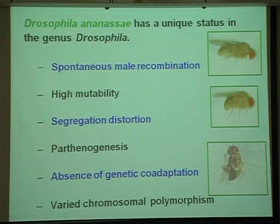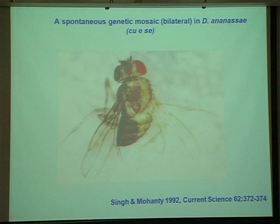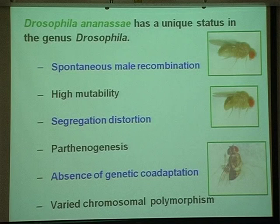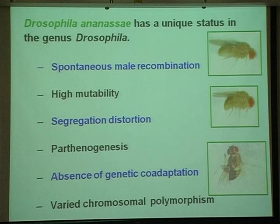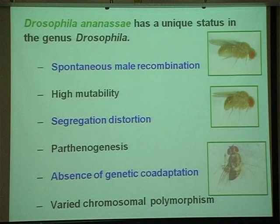Drosophila ananassae has many unusual features. This is the female, this is the male, and this is a genetic mosaic having left and right sides of different mutation and normal type. This species has spontaneous male recombinants. In Drosophila, males do not show crossing over, but this species shows male crossing over. That was reported for the first time by Japanese workers Moriwaki and Kikkawa. Later, it was found to be mitotic in origin — a very unusual feature of D. ananassae.